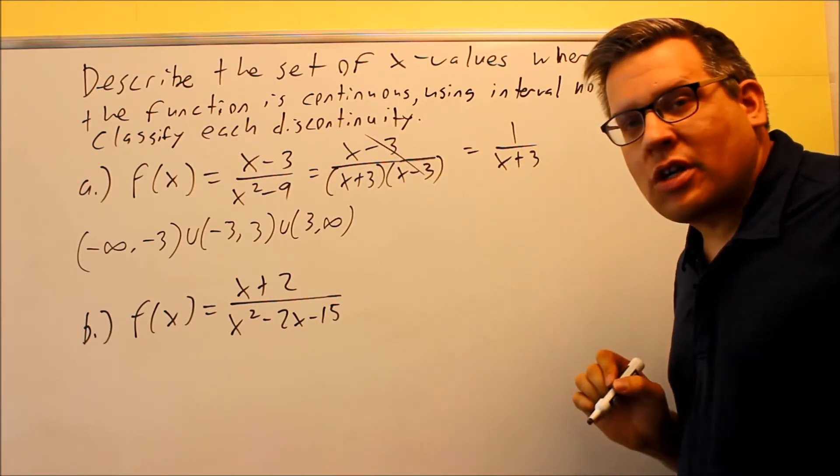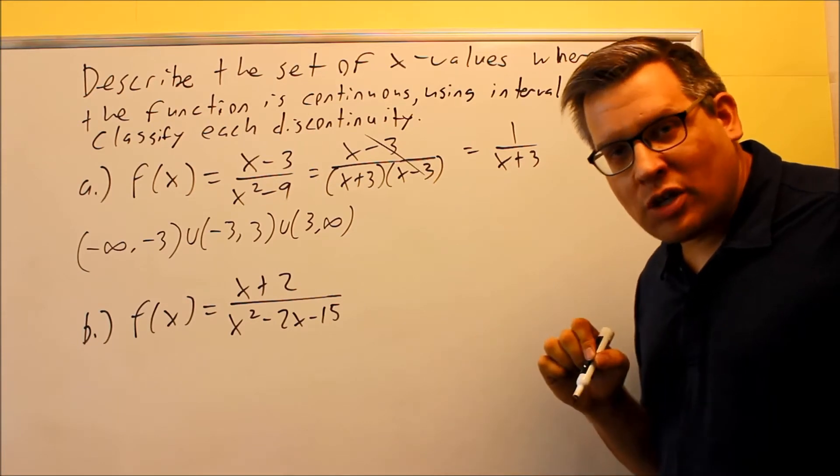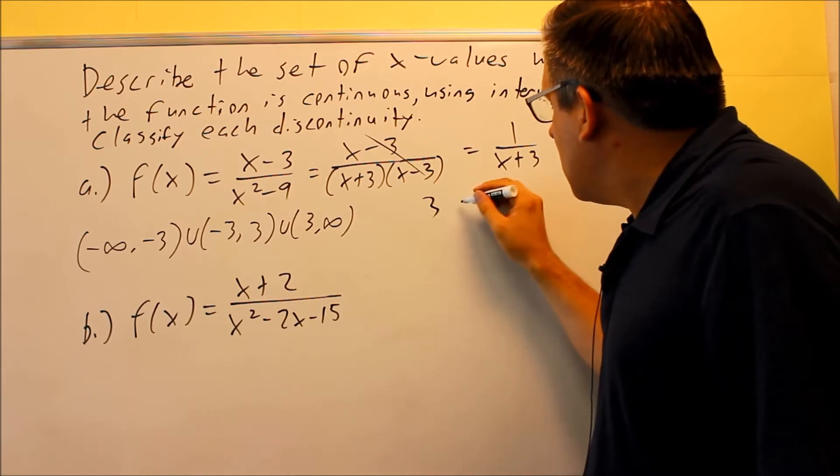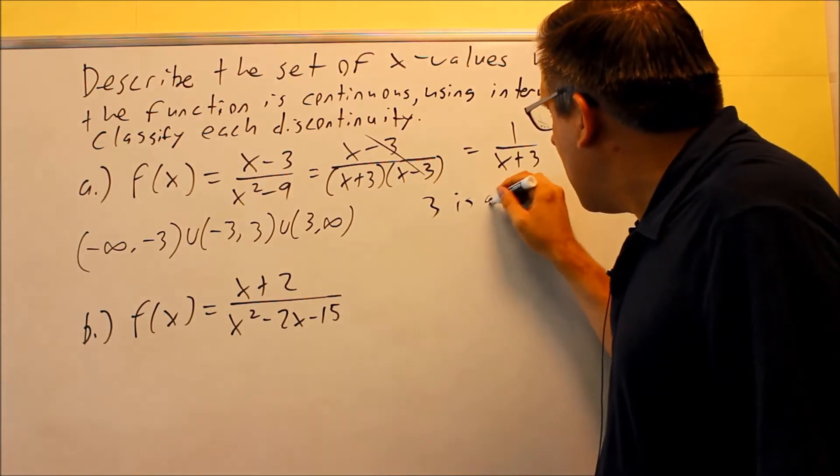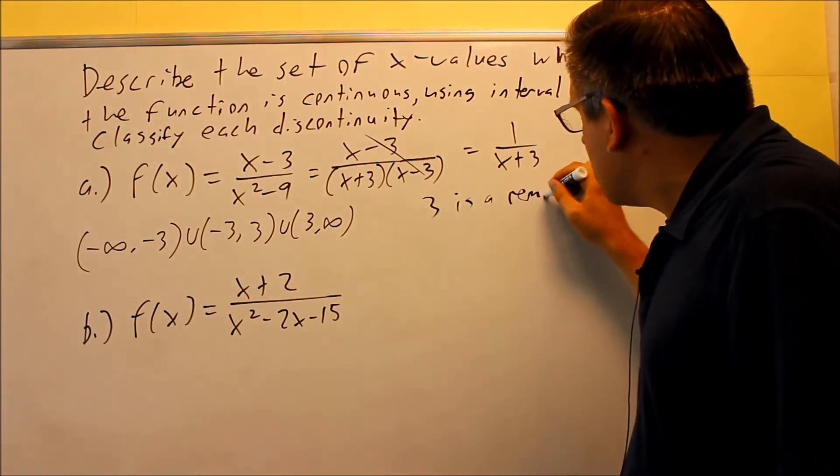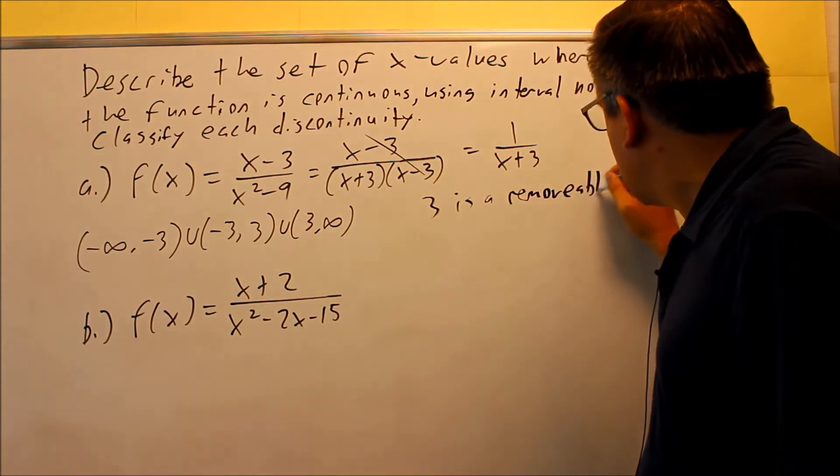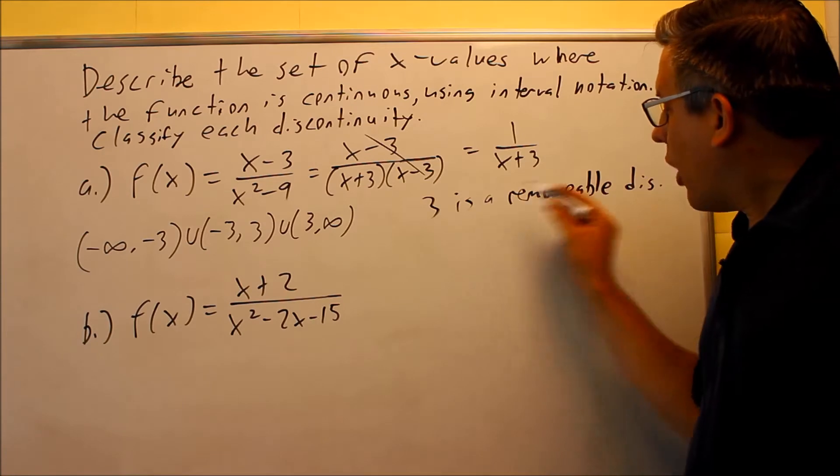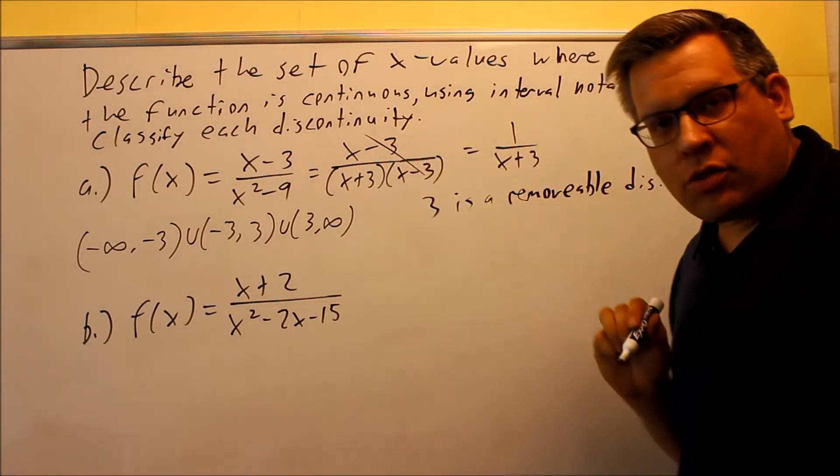If I take x minus 3, set it equal to 0, I'm going to get 3. So 3 is basically going to be, 3 is a removable discontinuity. Why is it removable? Because there's a hole at 3.